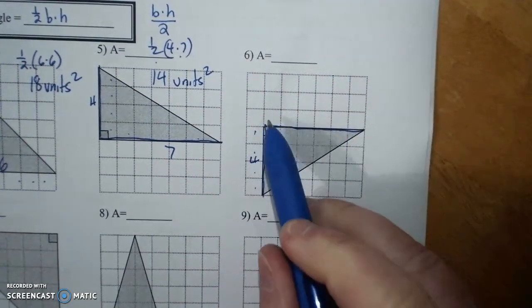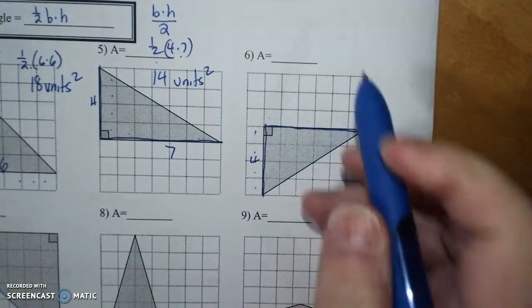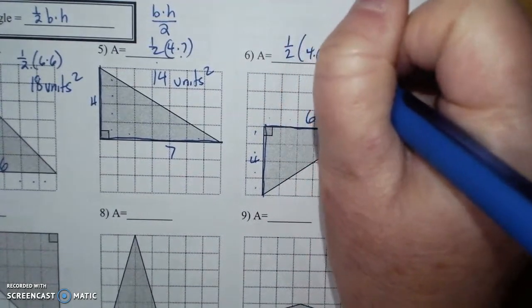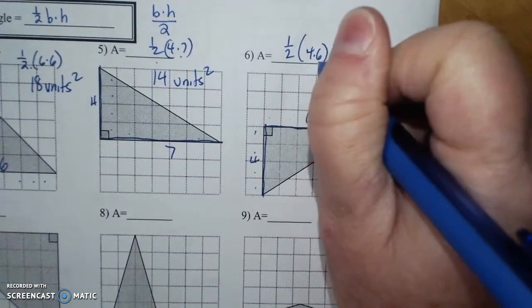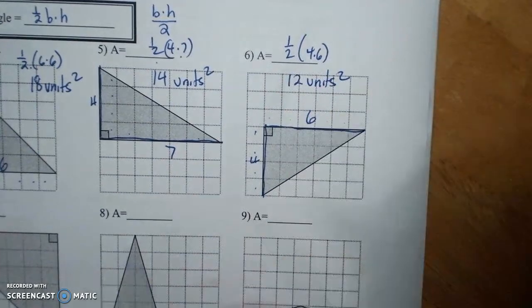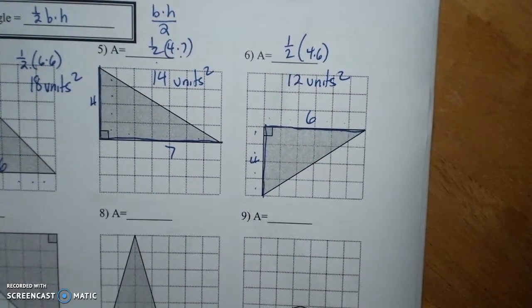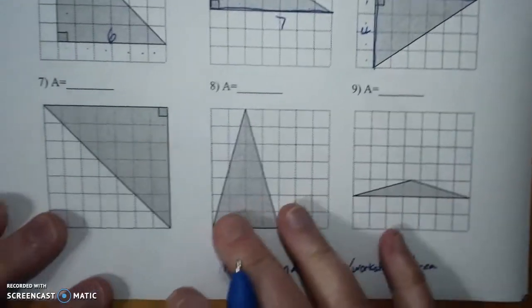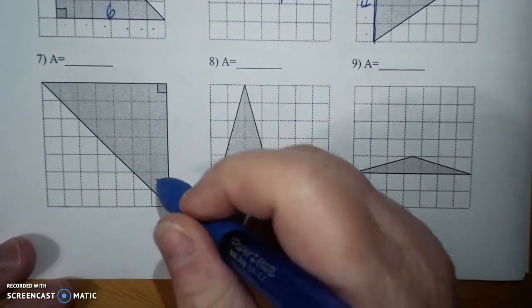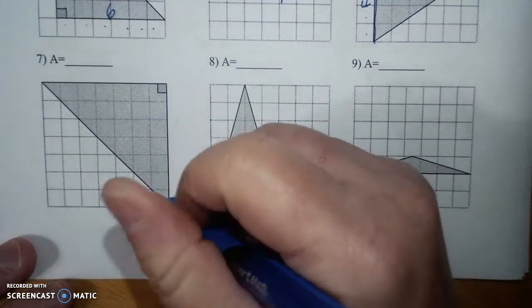One, two, three, four. One, two, three, four, five, six. It's one half times four times six, which is half of 24, which is 12 units squared. All the time, my units are going to be square units on area.